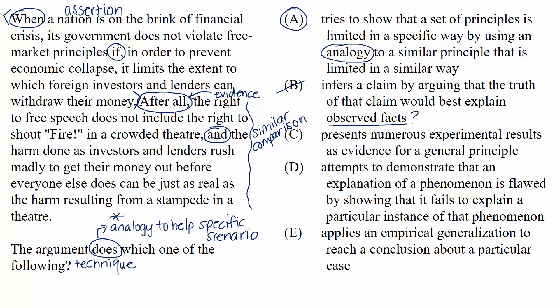C describes the argument as presenting numerous experimental results as evidence for a general principle. Well, this is similar to B in that there just aren't any experimental results in the passage, so the choice is describing something that isn't happening.